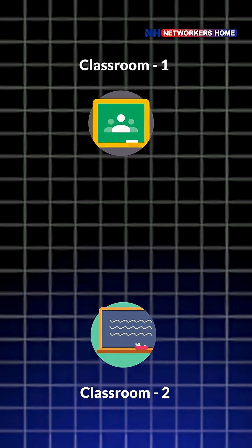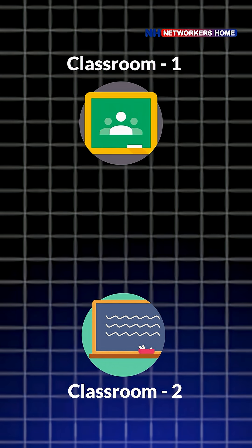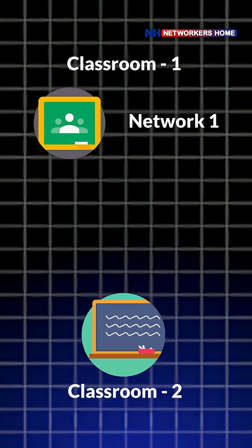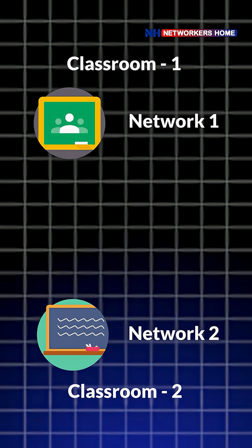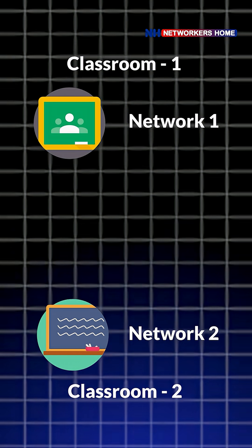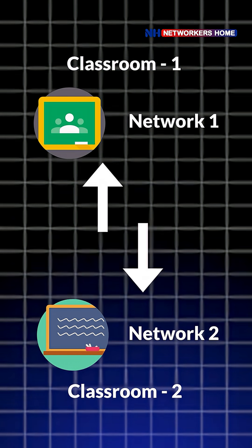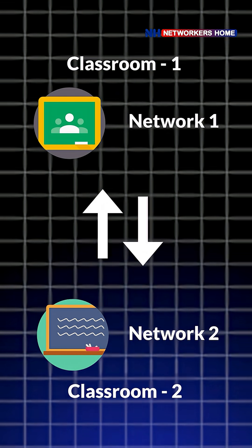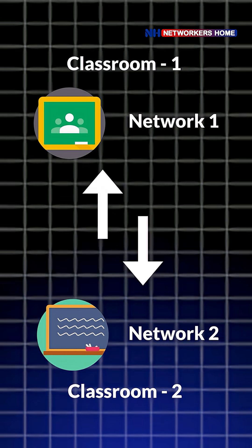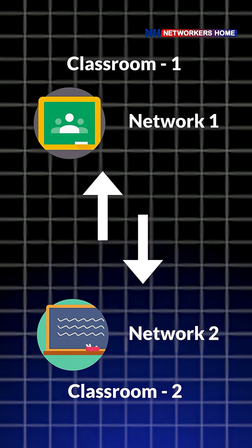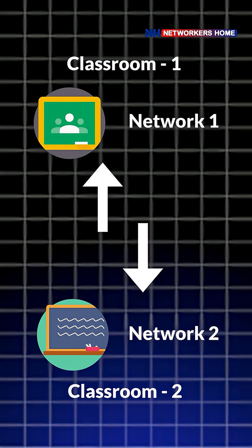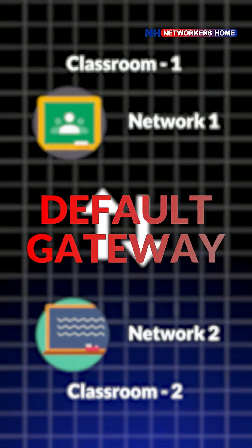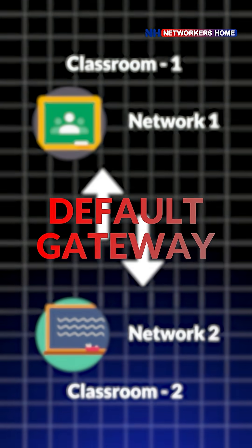I'll explain with an example. If there are two classrooms — consider classroom 1 as network 1 and classroom 2 as network 2 — if you want to communicate from one network to the other, that means from one classroom to another, then you require a default gateway in between.